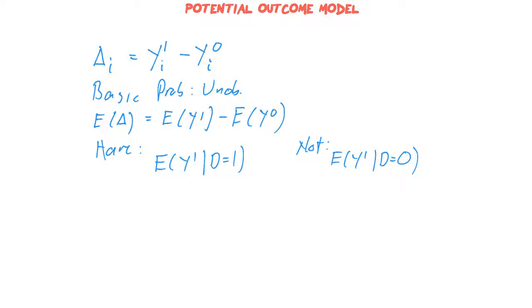I mean, it exists. We could think that, you know, if they had gotten the intervention, they would have a y1 value, but we just don't know it. So we don't have that information.